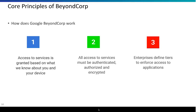The second principle is that every request to an application must be authenticated and authorized, and by default everything must be encrypted. At that time, the Chrome browser had the strongest encryption standards, so to access certain key systems within Google you must use Chrome. Every request — including Ajax calls made in response to something clicked on — those are all verified, authenticated, and authorized.